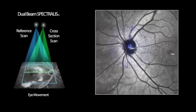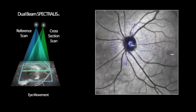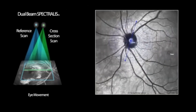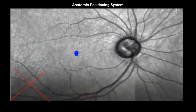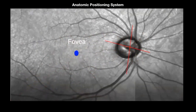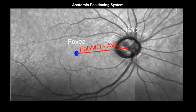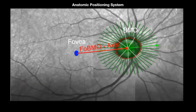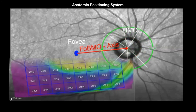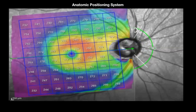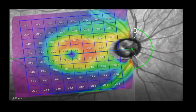With Spectralis, there is a dual beam scanner to detect minute eye movements during the examination. With the Glaucoma Module Premium Edition, the same piece of tissue is examined during follow-up, which is very important for detecting glaucomatous progression. With the Anatomic Positioning System, first the foveal centration is marked, then the BMO centration, then the fovea-BMO axis is plotted, followed by the 24-line scan examining 48 BMO positions, followed by the circular scan examining RNFL thickness, and finally the examination of the ganglion cell layer.